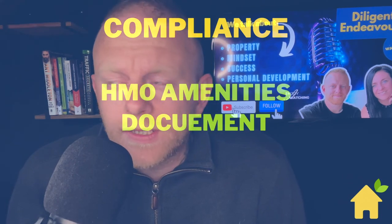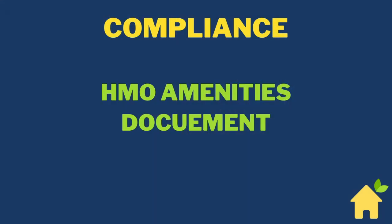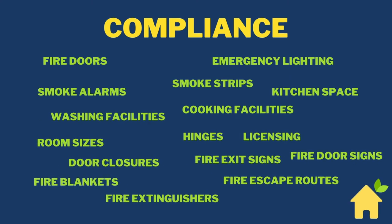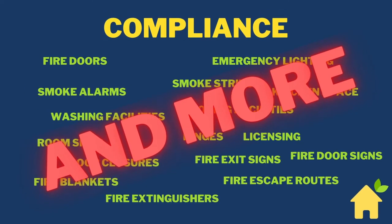I don't believe it's a starter strategy, and here's why — all of this compliance. You've got fire doors, smoke alarms, washing facilities, room sizes, door closures, fire blankets, fire extinguishers, fire escape routes, fire exit signs, fire door signs, licensing, hinges, cooking facilities, kitchen space, smoke strips, emergency lighting, thumb turn locks — and there's more. You've got to adhere to all of these requirements. I'm not saying this to scare you; I'm telling you this to make you aware of just how much goes into actually setting up and running a compliant HMO.